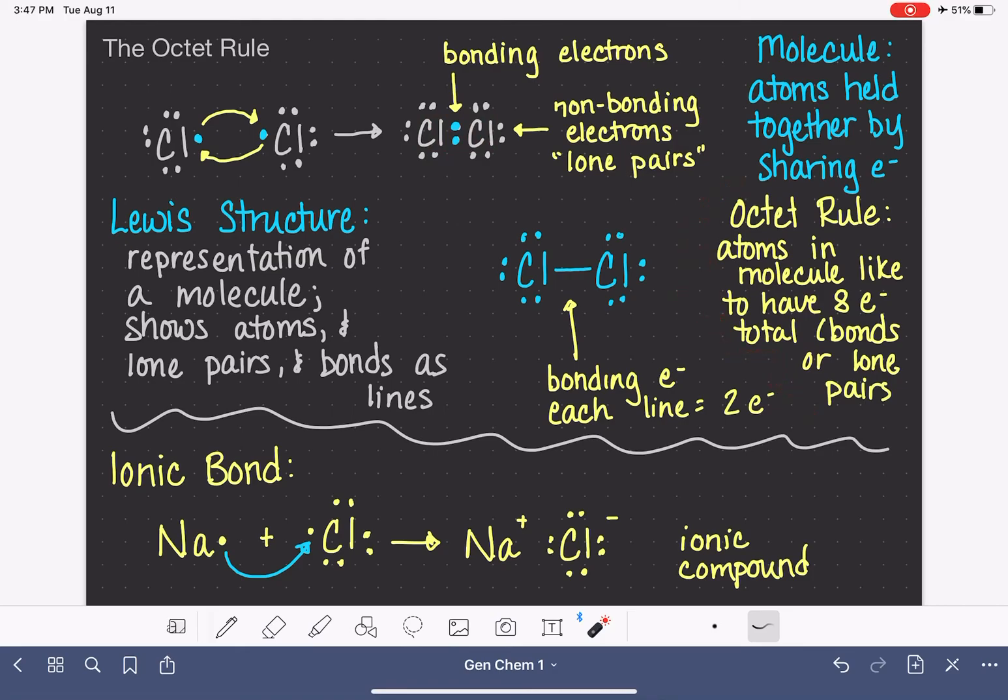So the octet rule is just a guideline that we use when we're drawing a Lewis structure or drawing the structure of a molecule. We draw it in such a way that all of the atoms in the molecule have eight electrons around them. Now there is one exception to the octet rule, and that is hydrogen.